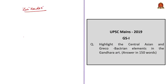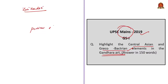How can this topic be used in your mains answer writing? There was a previous year mains question: 'Highlight the Central Asian and Greco-Bactrian elements in Gandhara art.' In this question, we are supposed to write about Central Asian (Mesopotamian/Iranian) as well as Greek and Bactrian elements in Gandhara art. We can expect a similar question like 'Write about the Persian elements in Indian art and architecture.' Here, you can write about this Zardosi art form which is of Persian origin.